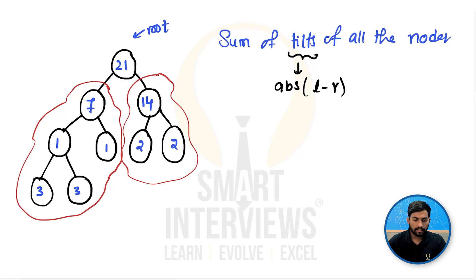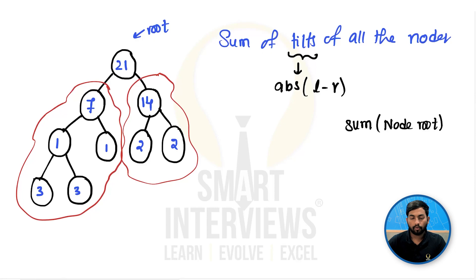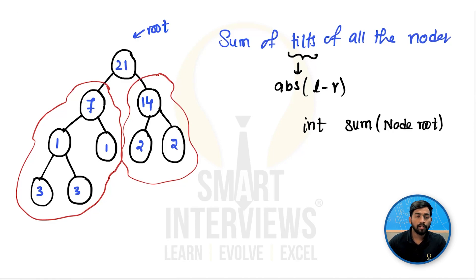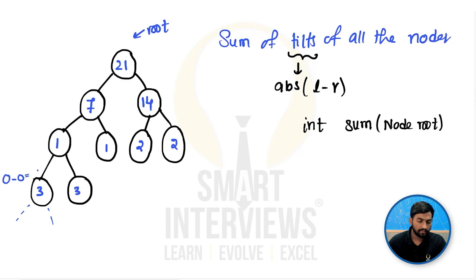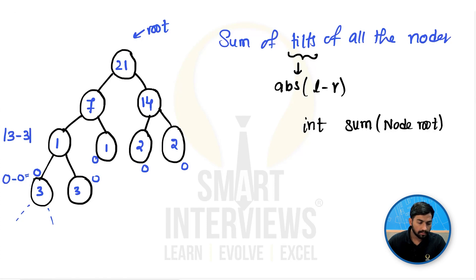Let's say we have a sum function and we pass the root to that sum function — it will simply give us the sum of the tree. We will use this function to find out the sum of the left and right subtrees. At node 3, as there are no left or right subtrees, the sum on both sides is 0, so the tilt is 0. The same applies to other leaf nodes — their tilt is also 0. At node 1 with sum 3 on the left and sum 3 on the right, 3 minus 3 gives a tilt of 0.